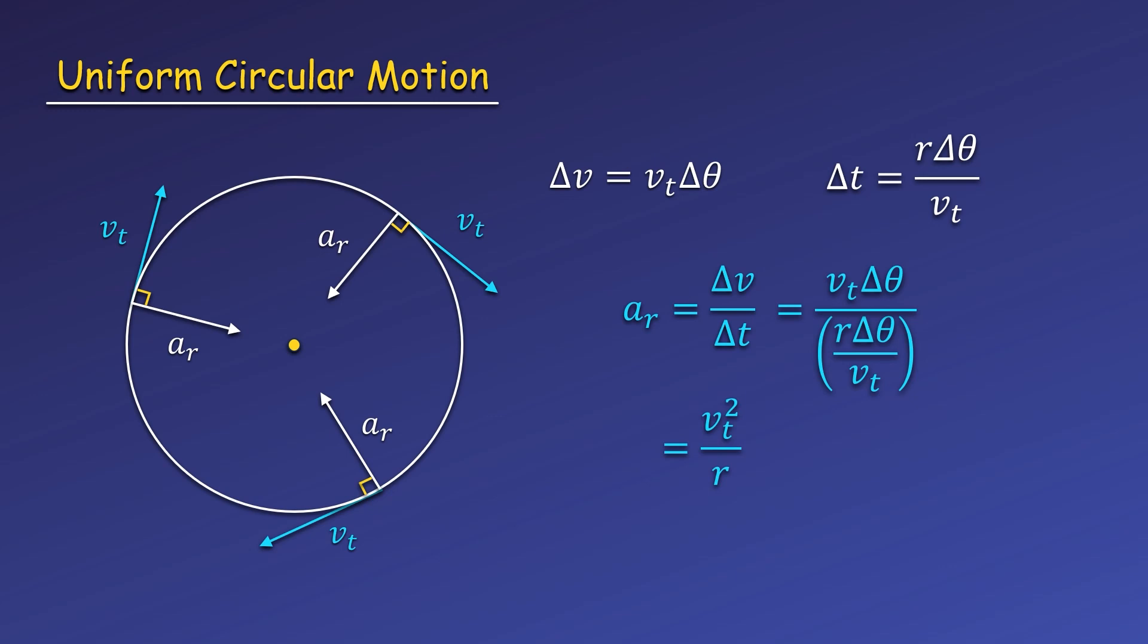We also have a way to go back and forth between the tangential and angular speed that we saw before, v = rω. Plugging this in, we can write the radial acceleration as ω²r.